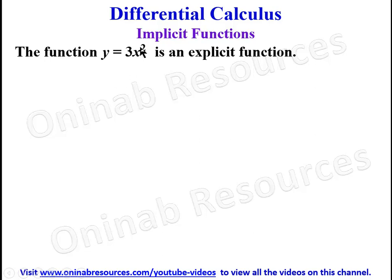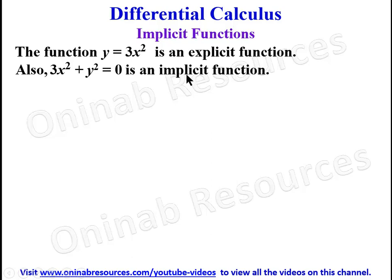The value of y depends on the value of x. Also, 3x² + y² = 0 is an implicit function. In this function, one variable has not been expressed as a function of the other, so the value of a particular variable is dependent on the other. We call this type of function an implicit function.